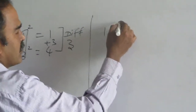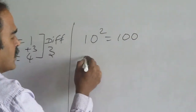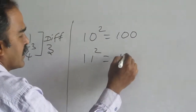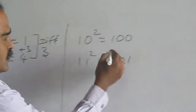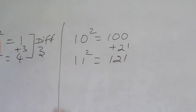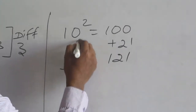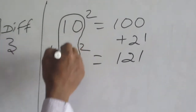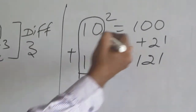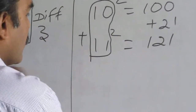Now, let us go for one more number. What is 10 square? 100. What is 11 square? 121. So, that is an increase of 21. How does this increase of 21 happen? Because the base number is 10 plus 11 is 21. The 21 is added there.